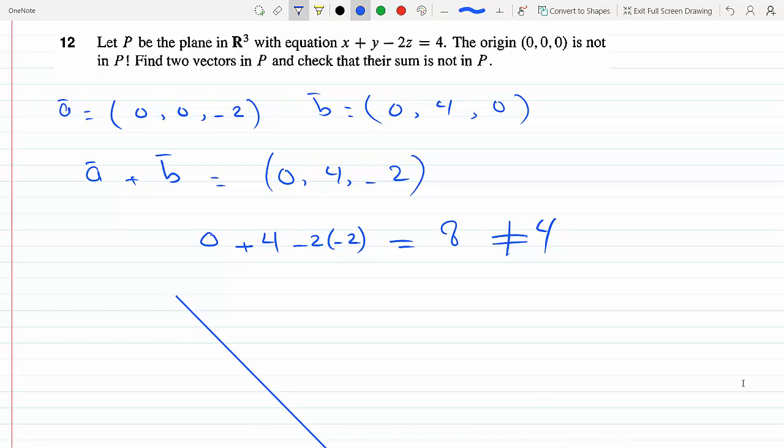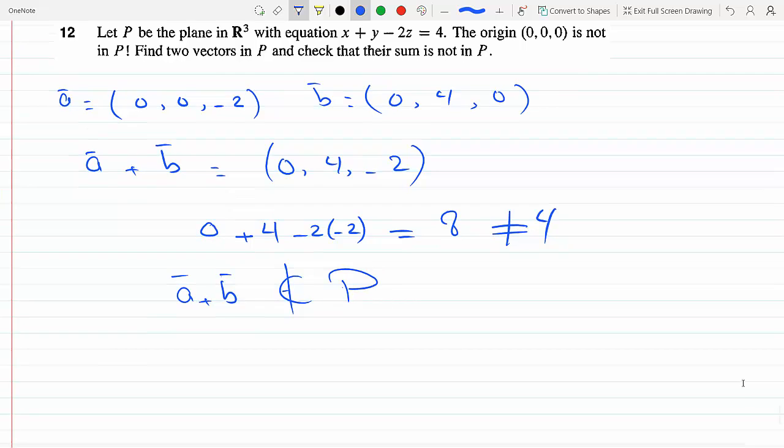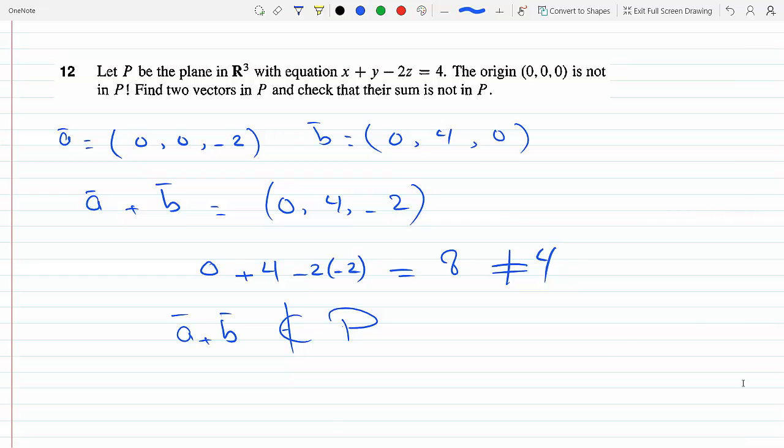Therefore the sum a plus b is not in P, and that shows that it cannot be a subspace because it doesn't include (0,0,0).